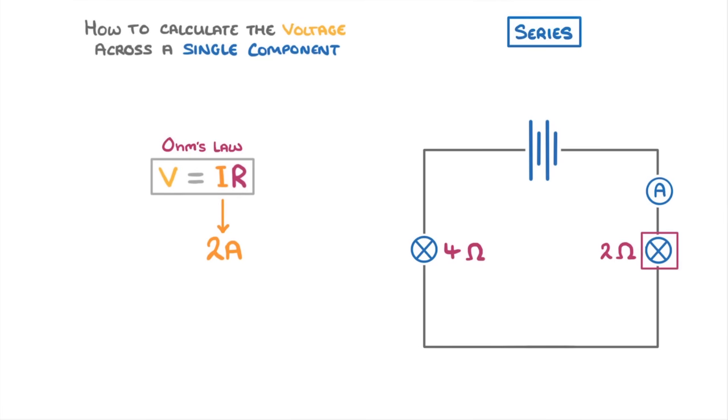For example, this lamp on the right has a resistance of 2 ohms, and the current across it must be 2 amps. So using our Ohm's law equation again, we can see that the potential difference must be 2 amps multiplied by 2 ohms. So there must be 4 volts across this specific lamp.